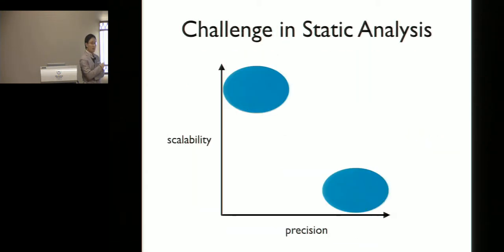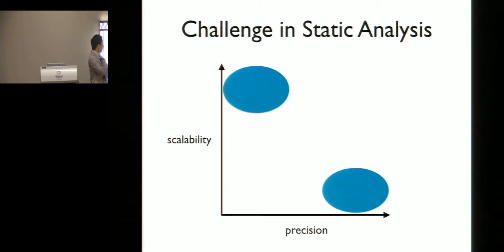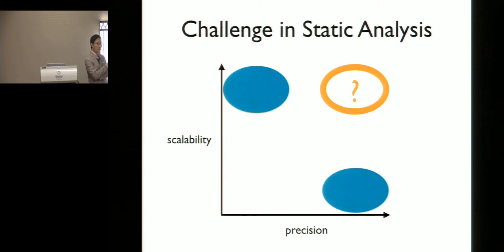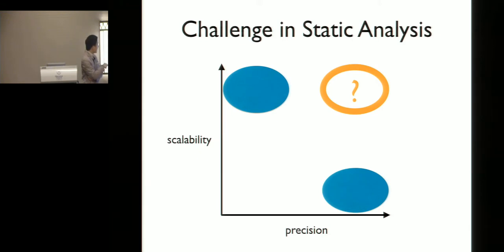One of the great challenges in static analysis is how to achieve scalability and precision in a single static analyzer. As a result, existing sound static analysis tools are typically divided into two groups, compromising either precision or scalability. The long-term goal of my research is to achieve both scalability and precision at the same time, and in this paper we present a new machine learning based technique for achieving this goal.